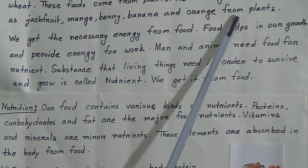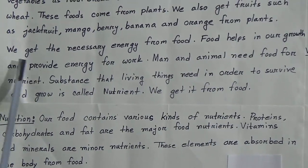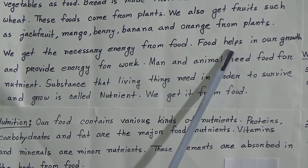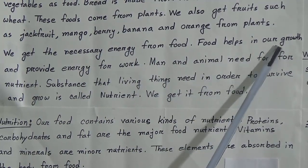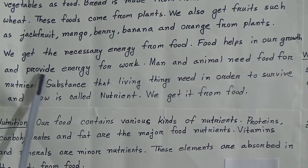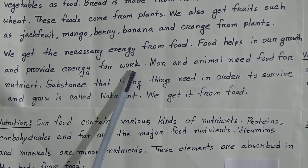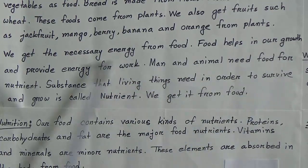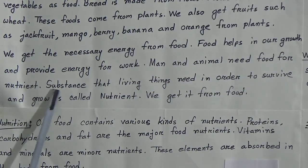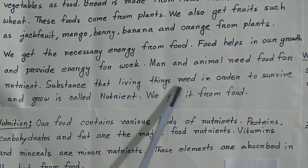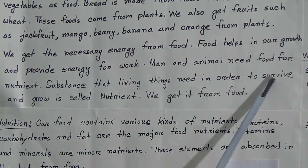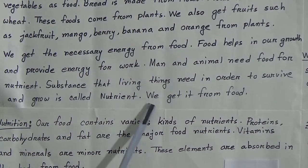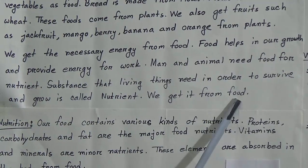We also get fruits such as jackfruit, mango, berry, banana, and orange from plants. We get the necessary energy from food. Food helps in our growth and provides energy for work. Man and animals need food for nutrients. A substance that living things need in order to survive and grow is called a nutrient. We get it from food.